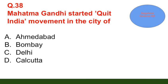Question number 38: Mahatma Gandhi started the Quit India movement from — option A: Amir; option B: Bombay; option C: Delhi; option D: Calcutta. The correct answer is option B — Bombay.